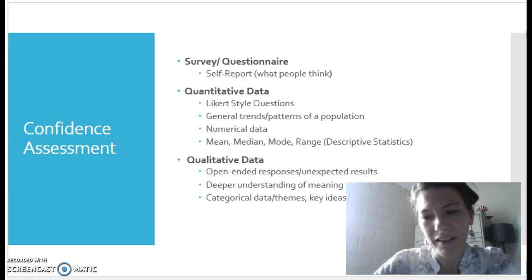We call this a Likert style question. And what this kind of data lets me do is to identify general trends or patterns of a population, in this case of students taking COM 224. That usually results in numerical data and I can utilize mean, median, mode, and range as ways of describing the population in that case.